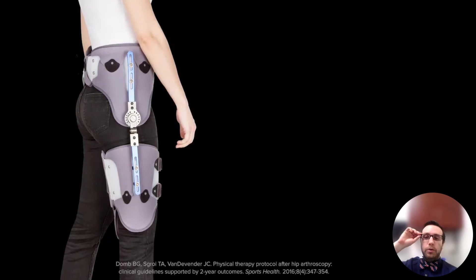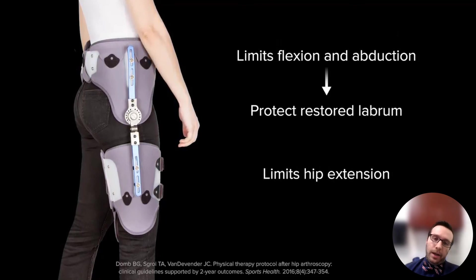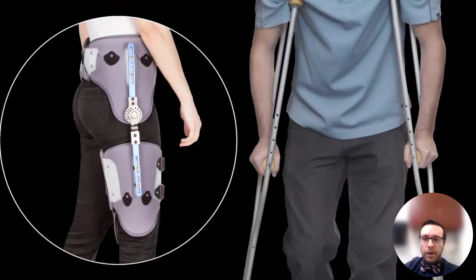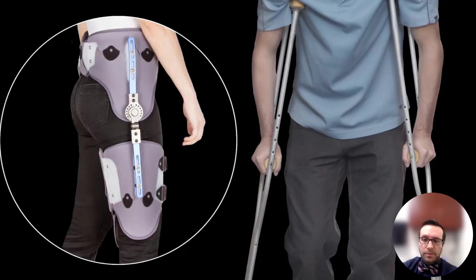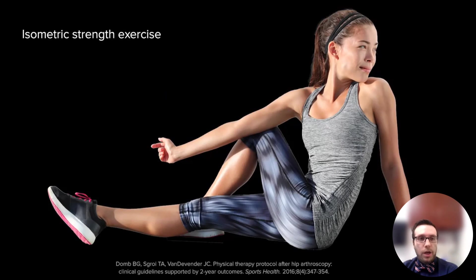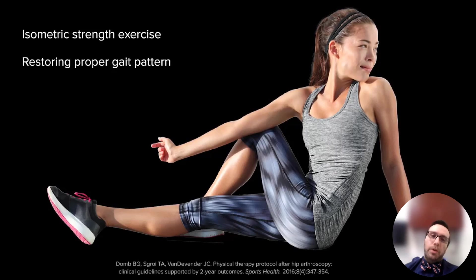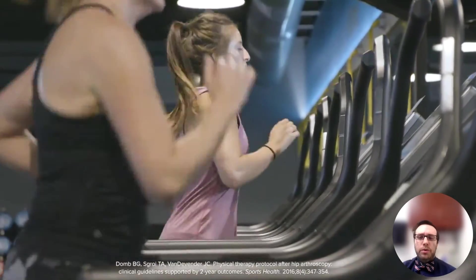After surgery, the patient will start physical therapy right away. During the first few weeks, the patient will be fitted with a hip brace that limits flexion and abduction to protect the repaired labrum, and limits hip extension to protect the capsule closure. Depending on the extent of surgery, patients will be on crutches anywhere from two to six weeks with progressive weight bearing. We initiate a comprehensive post-operative program focused on isometric strength exercises, restoring proper gait pattern, protecting tissue healing, and range of motion exercises. After 12 to 16 weeks, we move into more extensive and intensive training, with a return to sports around the six to nine month mark. Patients will continue to improve throughout that first year.